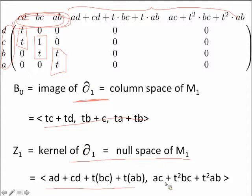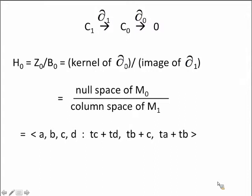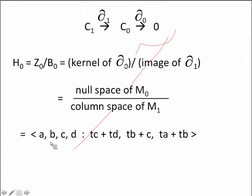We got our H-zero last time. Our null space for our Boundary 0 map — everything went to zero, so our generators were just all of the vertices.